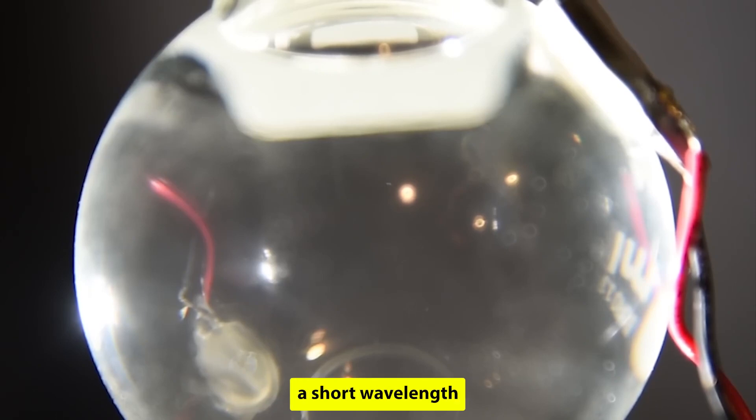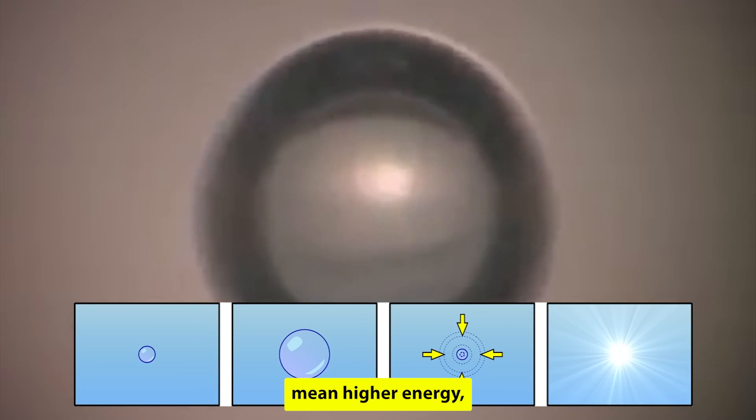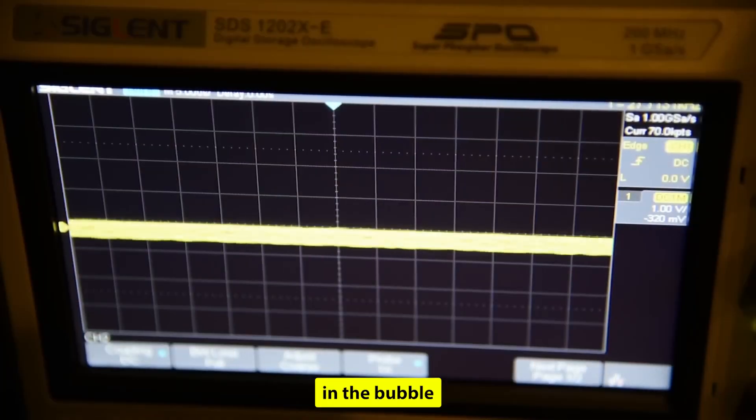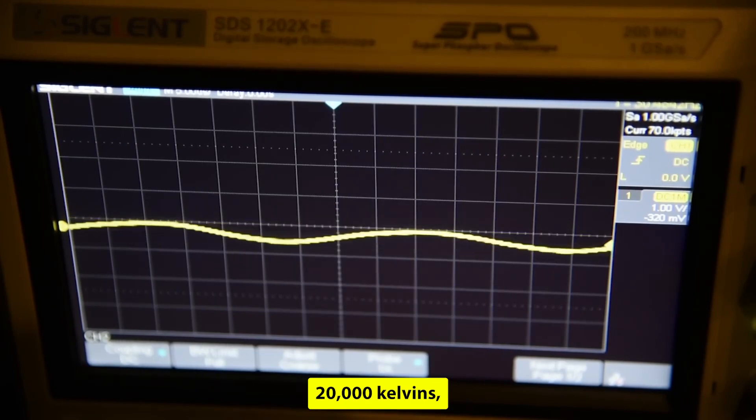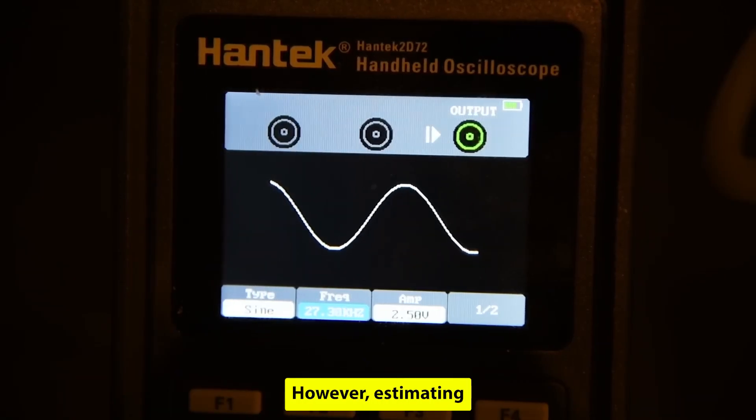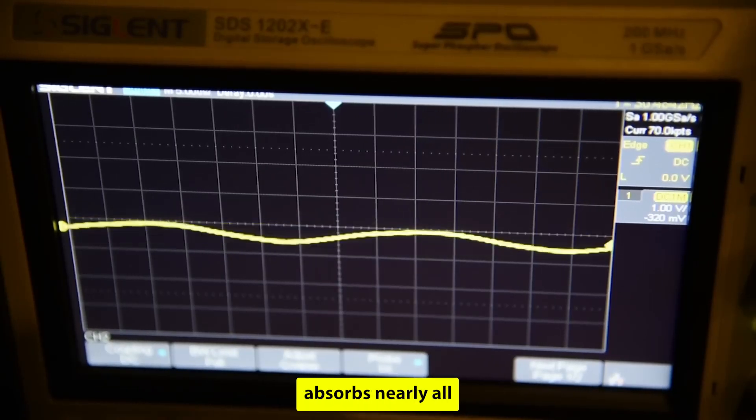The light emitted has a short wavelength, extending to ultraviolet. Shorter wavelengths mean higher energy, and the measured spectrum of emitted light suggests a temperature in the bubble of at least 20,000 kelvins, possibly exceeding 1 megakelvin. However, estimating these temperatures is challenging because water, for instance, absorbs nearly all wavelengths below 200 nanometers.